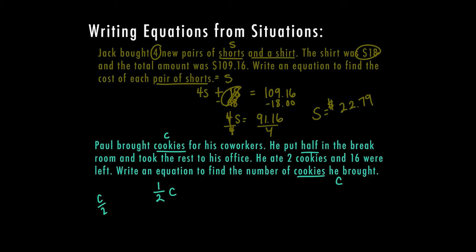1/2 c. And then he ate two cookies. Well, if I eat something in math, that means I'm going to subtract two. And then he was left with, so the total after that was 16. So we need to use this equation to figure out how many he actually brought with him to begin with.